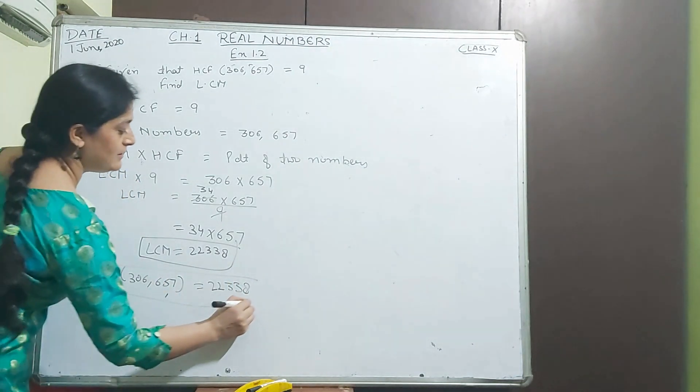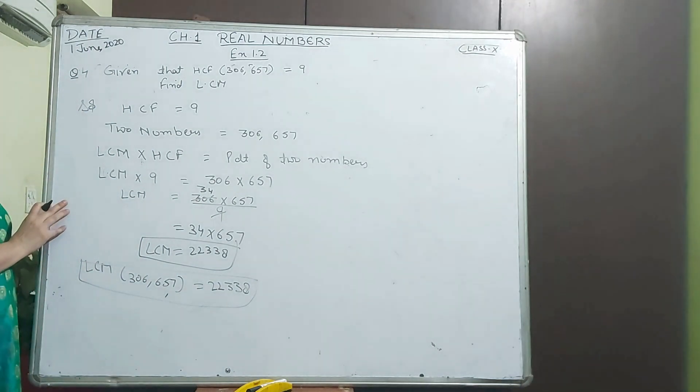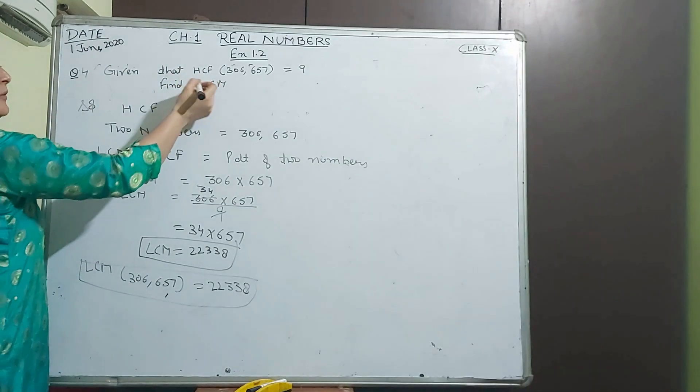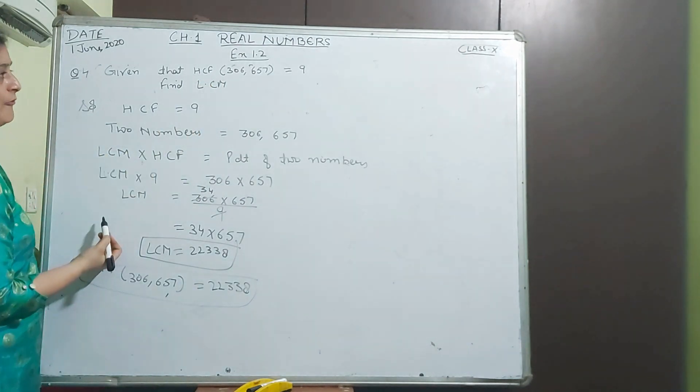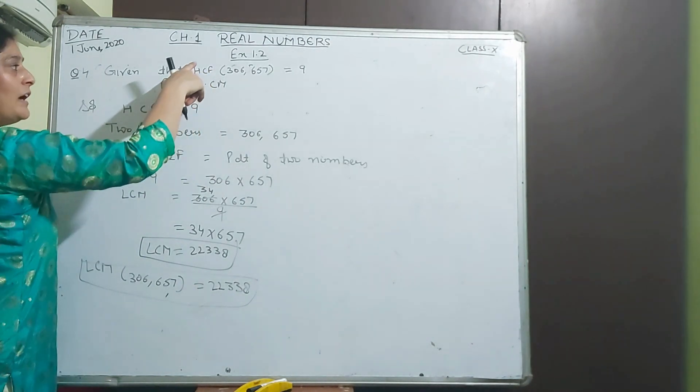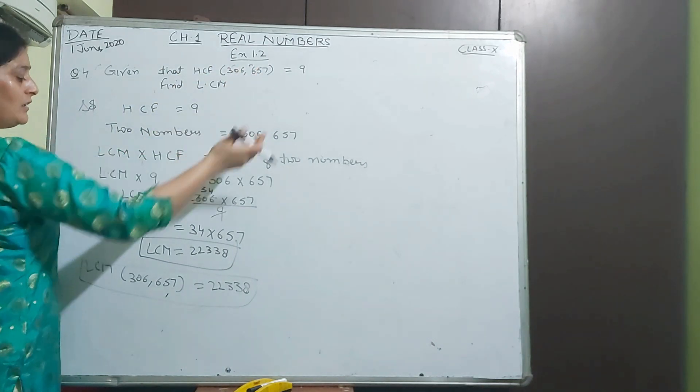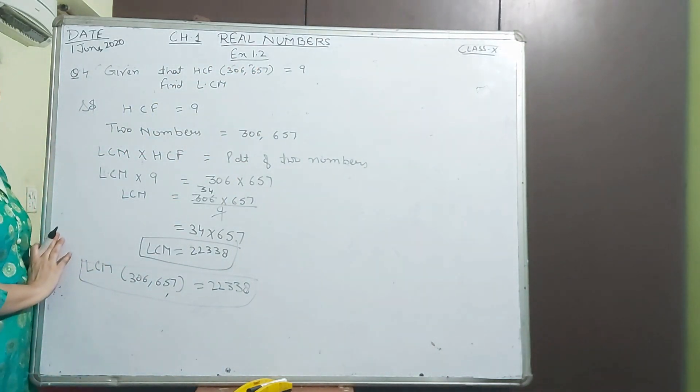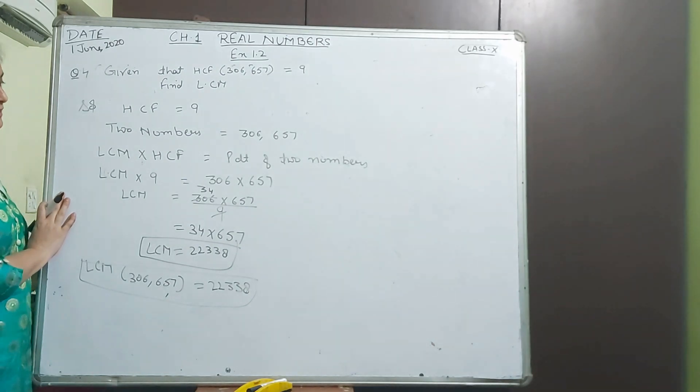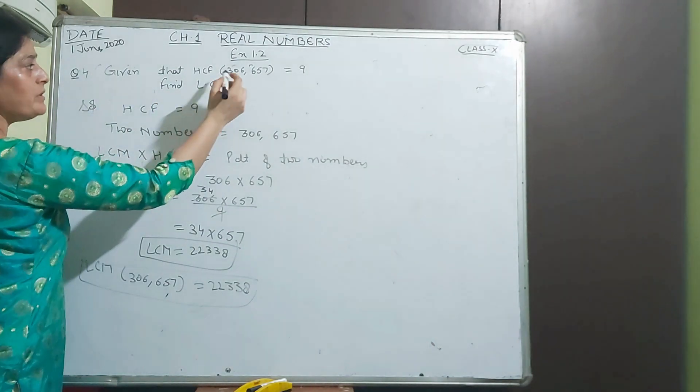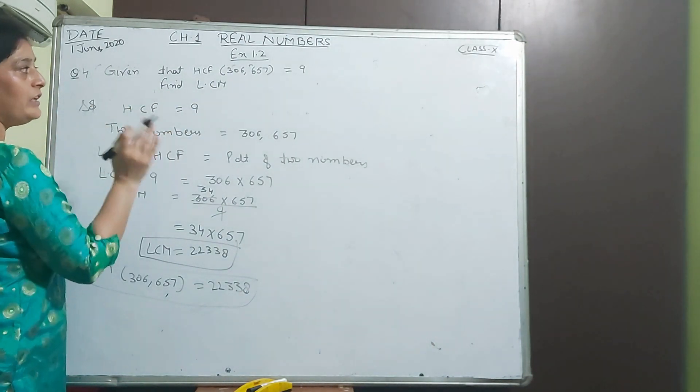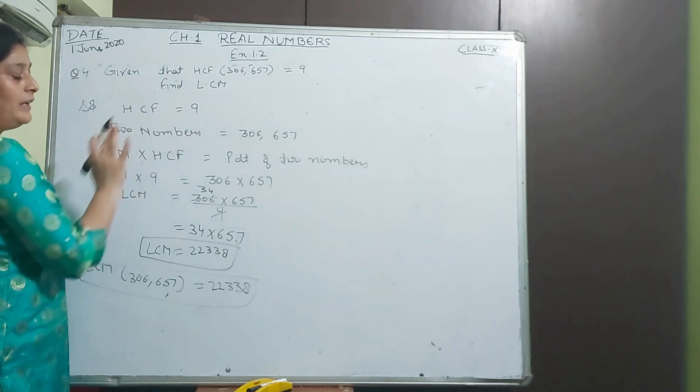Likewise you do the questions. If he says find HCF, the same formula applies. If he gives LCM and one number, you should find the other number like this. Whichever one thing is unknown and three things are known, you can easily find that.